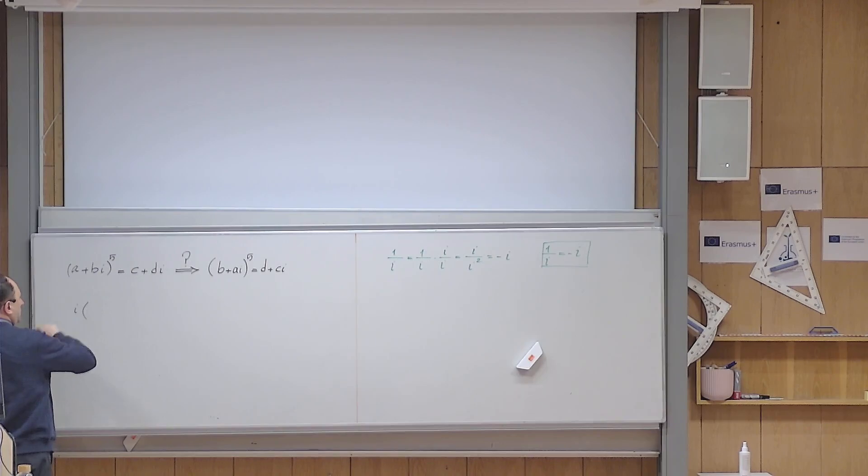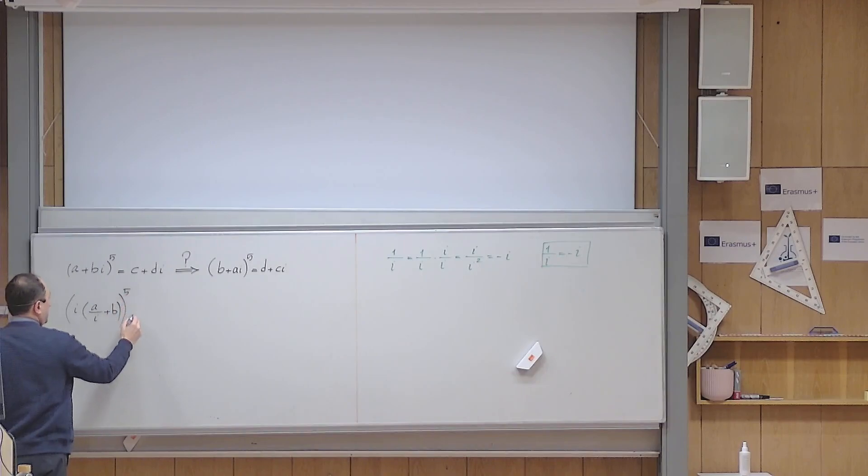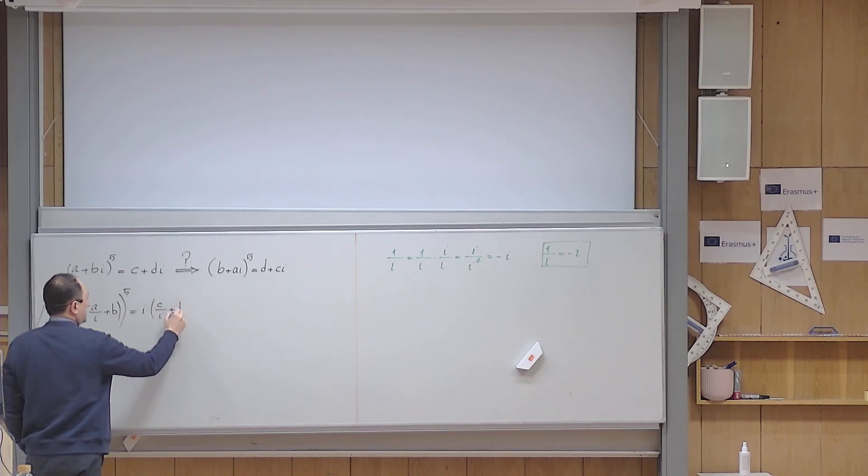I'm factoring i out, so this becomes a over i, and then this becomes b. Of course I have the fifth power now. I can do the same thing here. I can factor an i out, then it becomes c over i and then plus d.